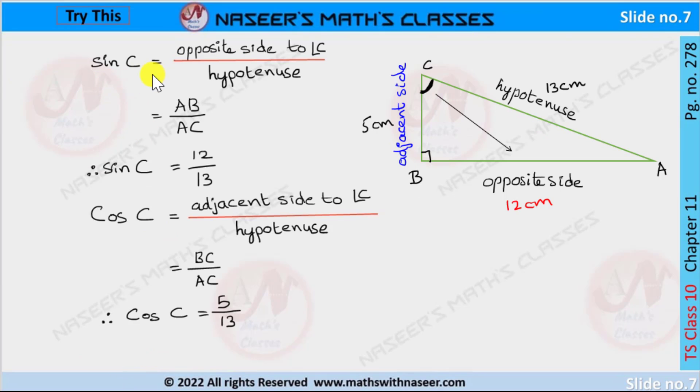Sin C is equal to opposite side to angle C by hypotenuse. Opposite side is AB and hypotenuse is AC. Therefore sin C is written as 12 by 13.